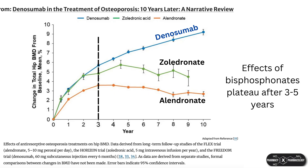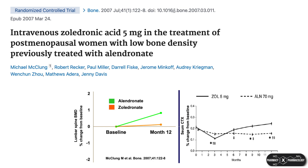There will be a percentage of patients where bisphosphonate treatment is unsuccessful, and it would be reasonable to transition them to a different agent—for example, from alendronate to zoledronic acid. A study indicates that patients who are already orally compliant with alendronate may not benefit much from transitioning to zoledronic acid in terms of BMD gains.